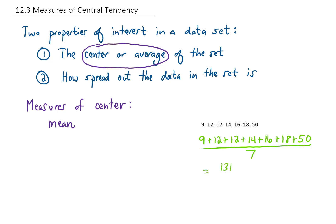I'm getting 131 divided by seven, which is approximately 18.7 — that is the mean for this set of data. Now for some notation: if this mean is the mean of a sample, we call it x-bar — x with a little bar on top. If instead this data was actually a population, we would have found a population mean, and that has a different symbol.